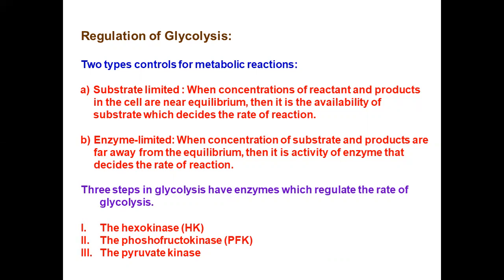First of all, hexokinase is used at the start — glucose is converted by hexokinase. Then phosphofructokinase, which converts fructose 6-phosphate to fructose 1,6-bisphosphate. And pyruvate kinase, which converts phosphoenol pyruvate to pyruvate. These three enzymes regulate glycolysis.